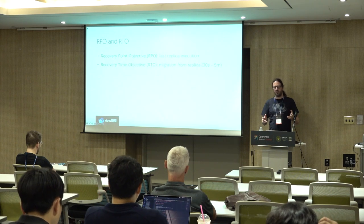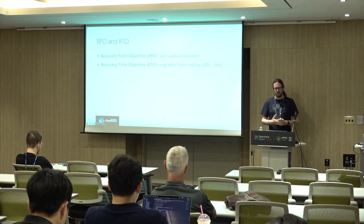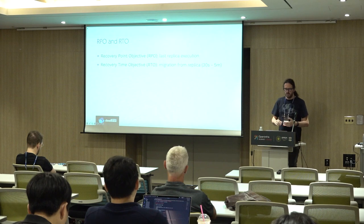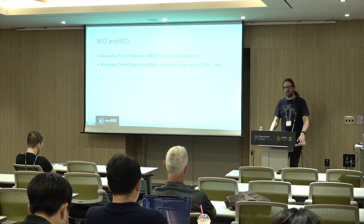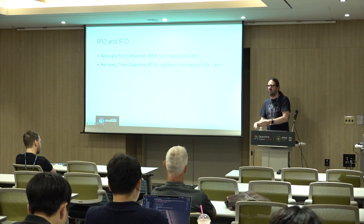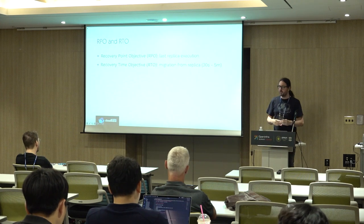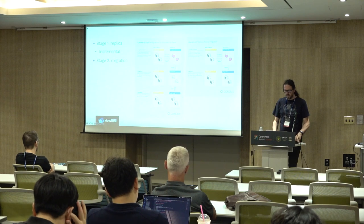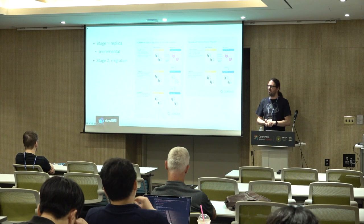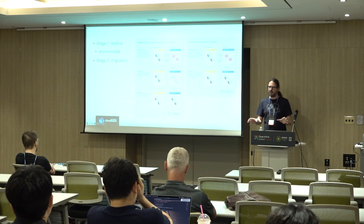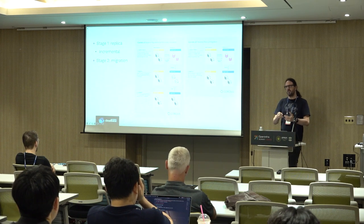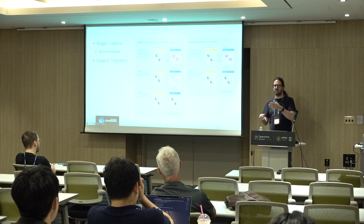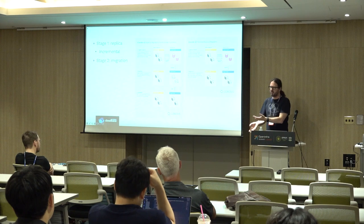When talking about disaster recovery, there are two key terms: RPO and RTO. The RPO, the Recovery Point Objective, is determined by the last time you executed a replica — one of those incremental operations. The RTO, the Recovery Time Objective, is based on the migration-from-replica step, which is the moment you press the button and say start — which ranges from a few seconds to a few minutes depending on how fast your target cloud is. The whole migration process is divided into two primary steps: the replica, which replicates data from source to target incrementally, and the migration itself, which starts the VM from that replicated data.